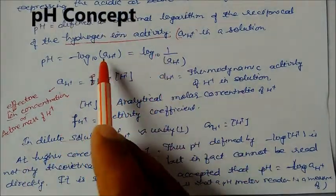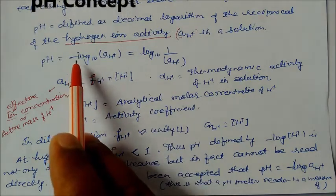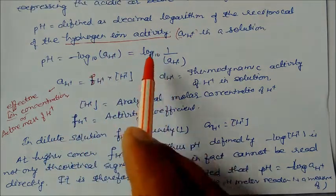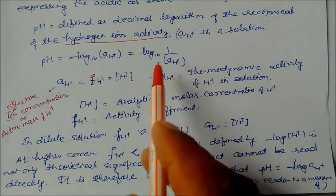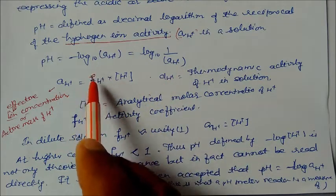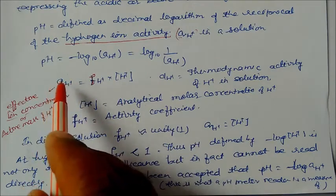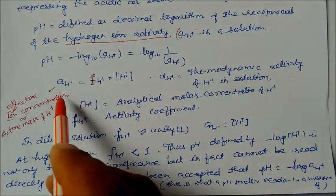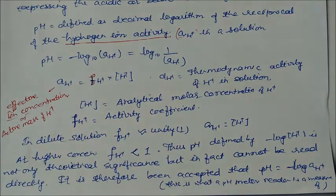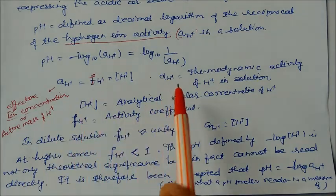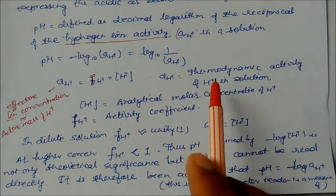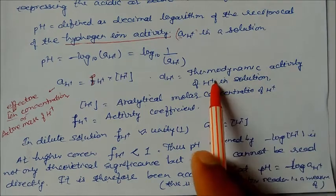Numerically we can write pH = -log(aH+), where aH+ is the hydrogen ion activity. Or in reciprocal form, pH = log(1/aH+). What is aH+? This is the activity coefficient times [H+]. This is the effective ion concentration or thermodynamic activity of H+ in solution.